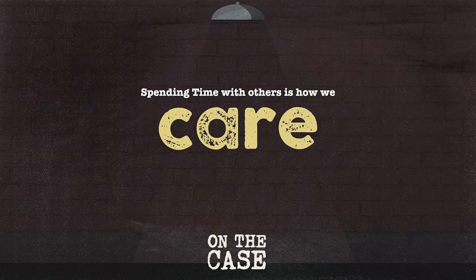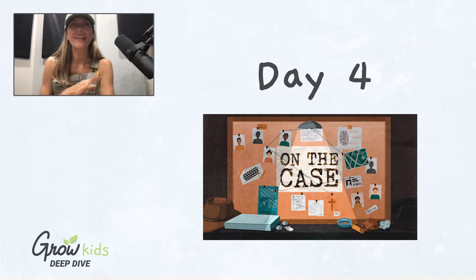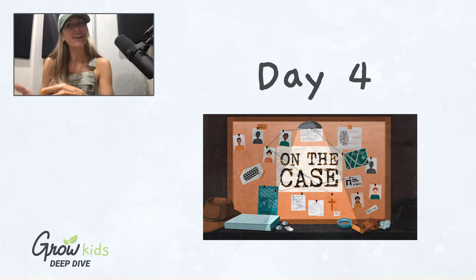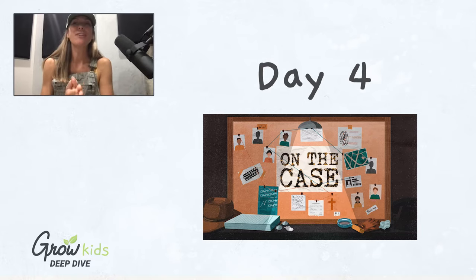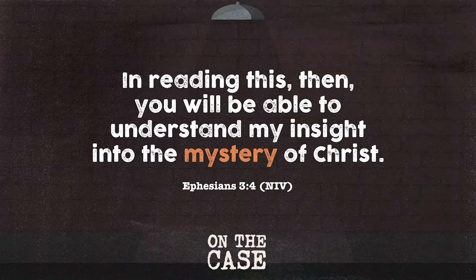Day three's big idea is: spending time with others is how we care. On day four, we go to Luke chapter 15 to learn about the parables of the lost sheep, coin, and son. In each, the owner or father rejoices and invites others to celebrate when something lost is found — reminding us that when we have good news like knowing Jesus, we should share it. Day four's big idea is: sharing our story is how we love. The memory verse is Ephesians 3:4.